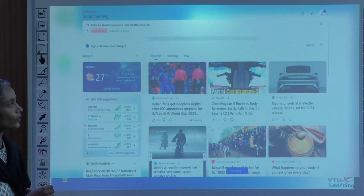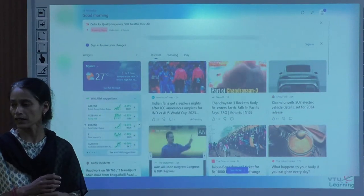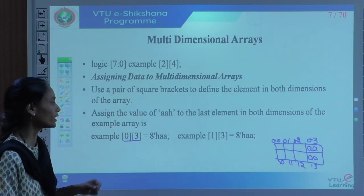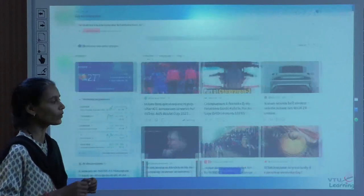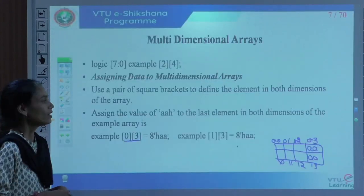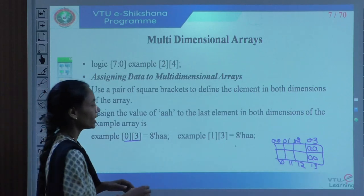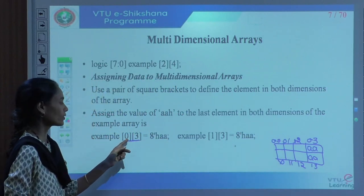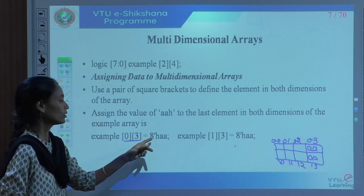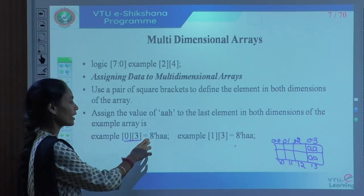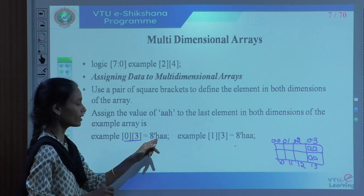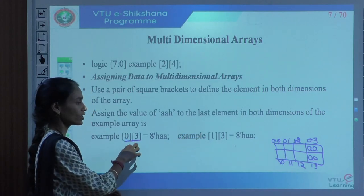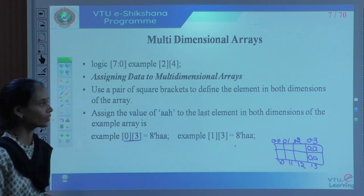This is how arrays can be used and how multi-dimensional array assignment happens. We need to specify where exactly we want to assign values corresponding to rows and columns. For example, 8'hAA means I have an 8-bit hexadecimal value AA to store. This tells us the location and the value to store in the array.